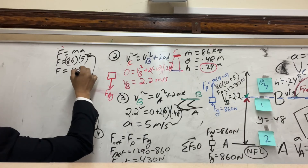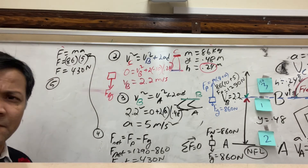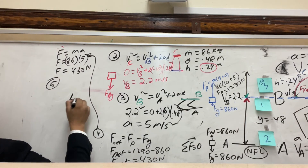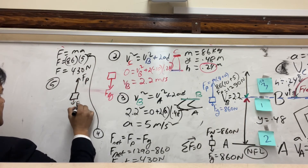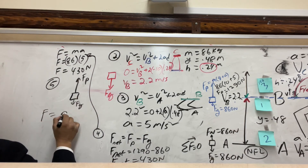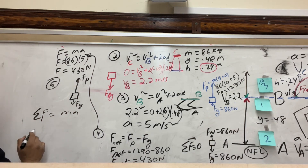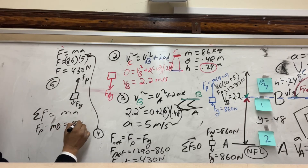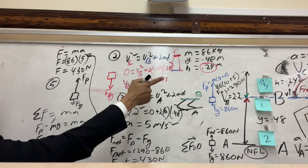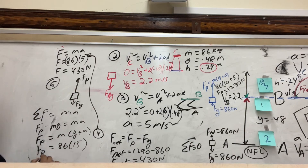Problem number five asks for the push force F_push. Using the elevator equation: F_push − mg = ma, so F_push = m(g + a) = 86 × (10 + 5) = 86 × 15 = 1290 Newtons.